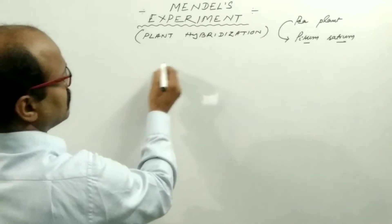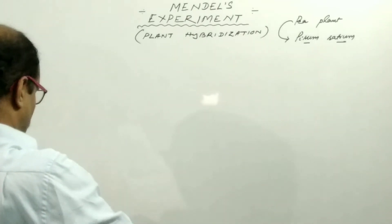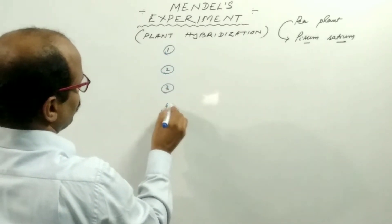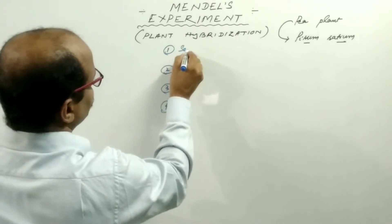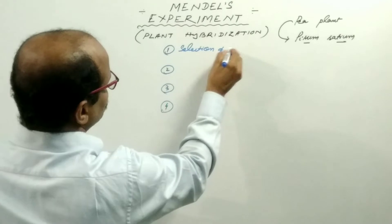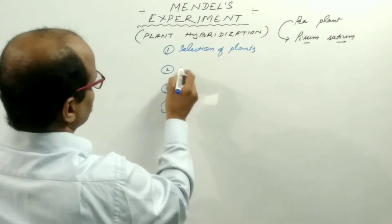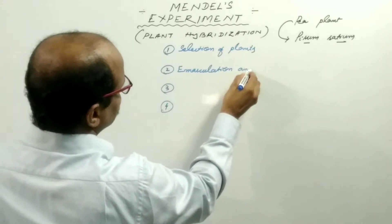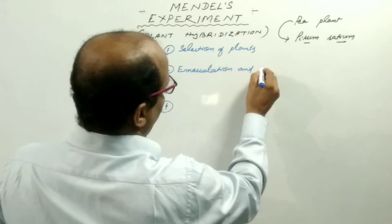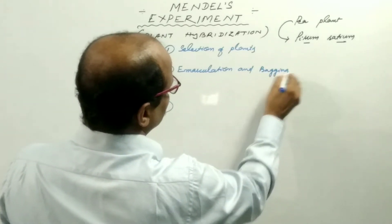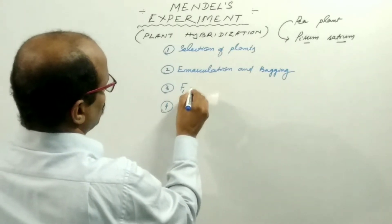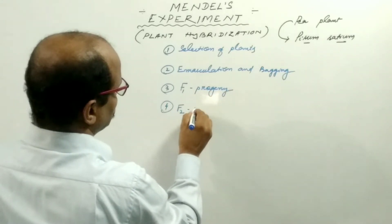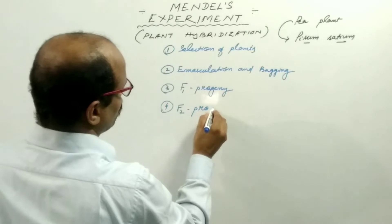We will discuss this experiment through four headings. First may be the selection of plants. Second may be emasculation or the subheading bagging. Third may be the production of F1 progeny. And the fourth heading may be the production of F2 progeny.